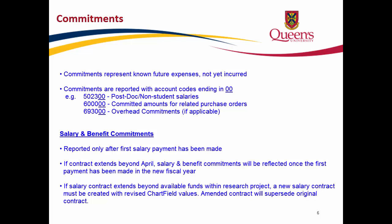Important points to keep in mind when looking at salary and benefit commitments. Commitments will not be reported until after the first salary payment has been made. For example, if a salary contract is approved in June and the first payment is made in September, the related salary commitment will not be reported until September. Furthermore, salary and benefits are not necessarily committed to the end of the project. Therefore, if salary contracts extend beyond April 30th, the commitments which apply to the months following April will not be reflected in the report.